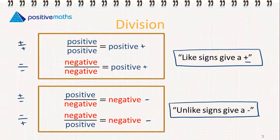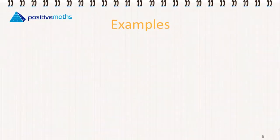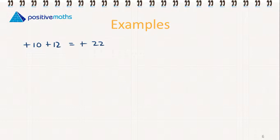These rules also apply to all types of numbers: natural numbers, integers, real numbers, and rational numbers. Let's go through some examples for addition and subtraction. Plus 10 plus 12: signs are the same, we add them and keep the sign — we get plus 22. Plus 10 minus 2: signs are different, we subtract and keep the sign of the bigger number — we get plus 8.